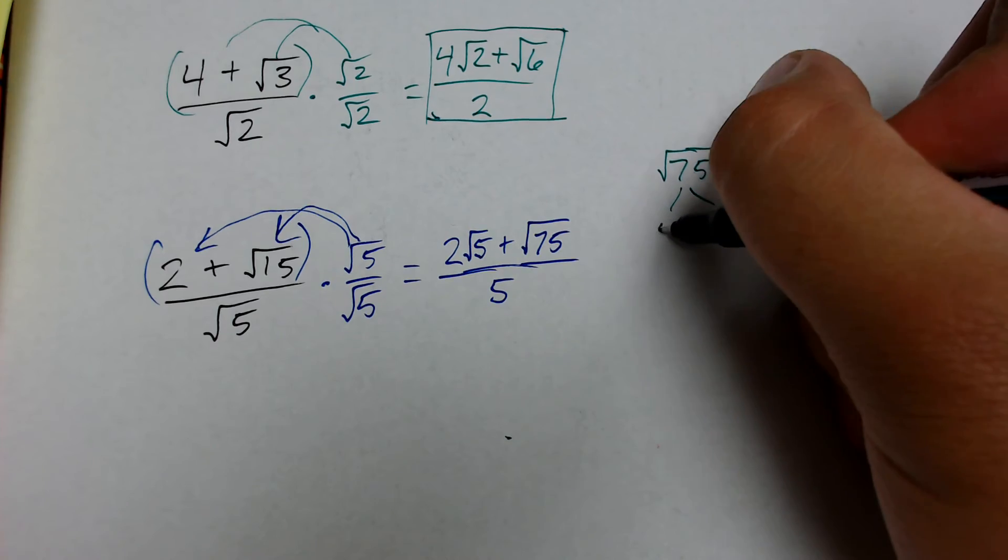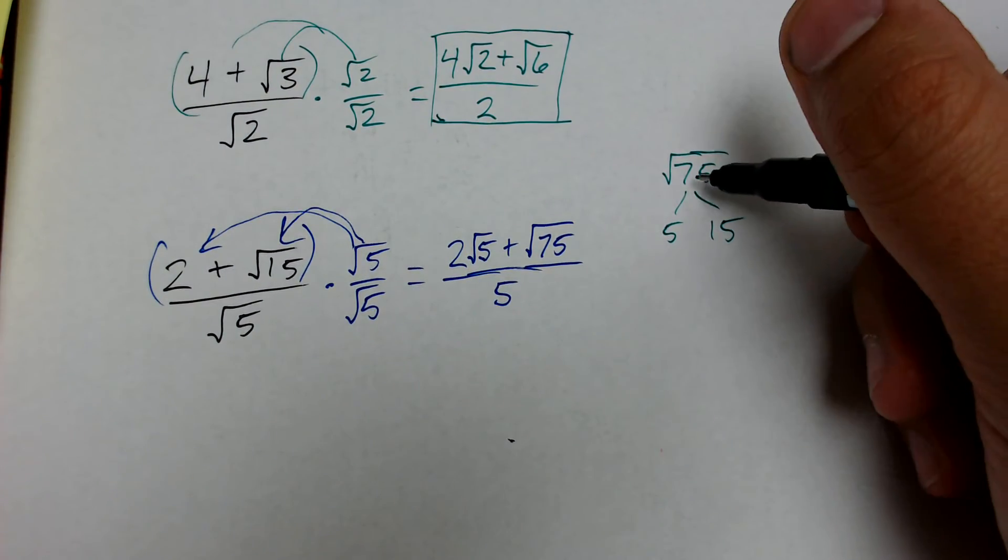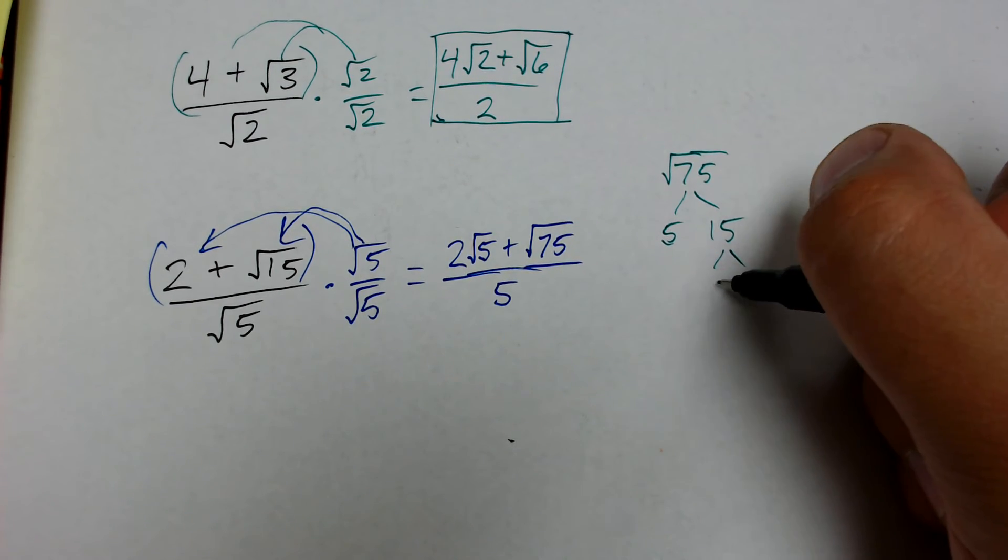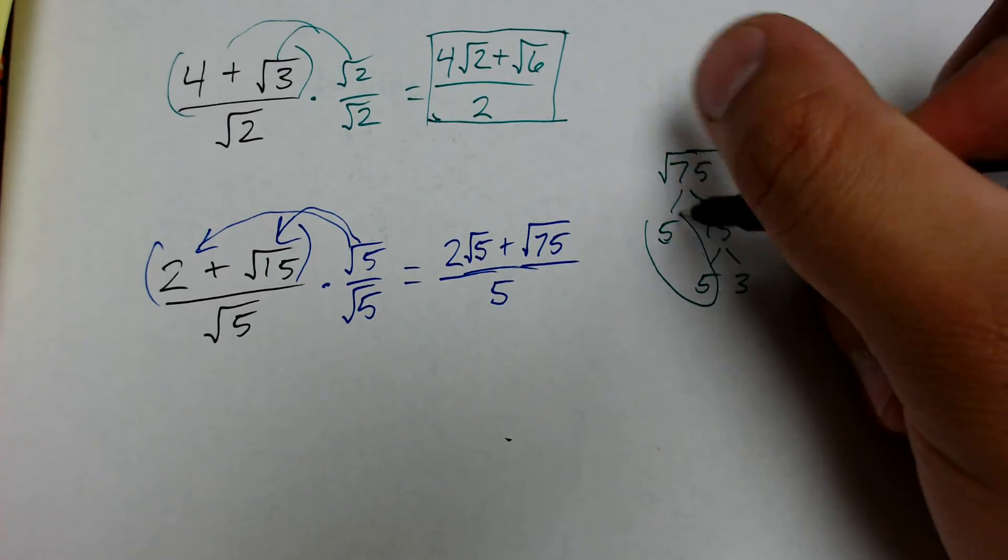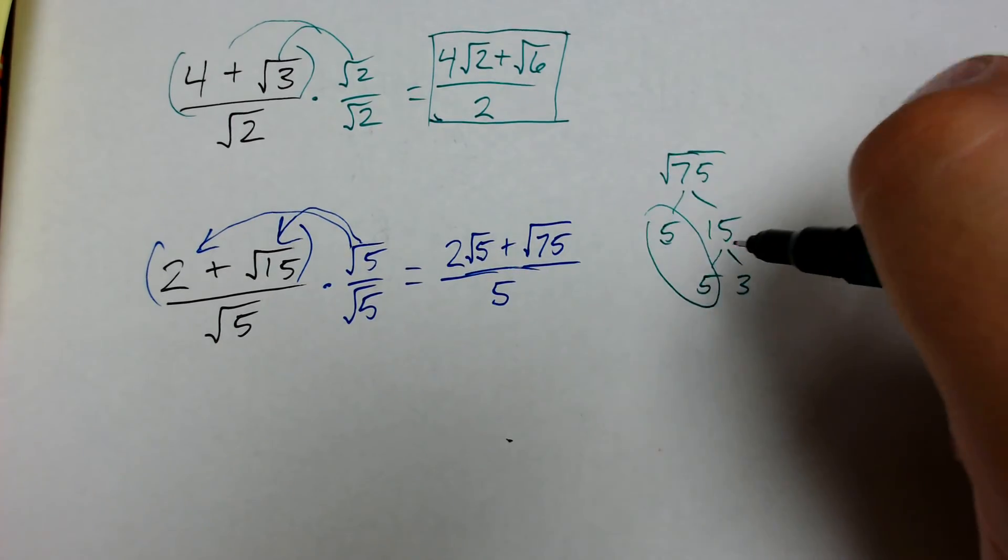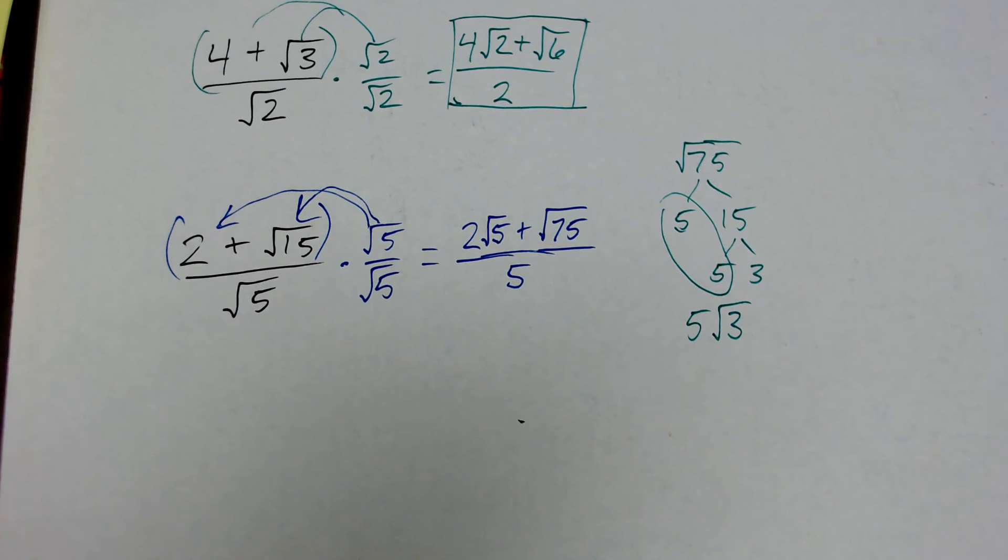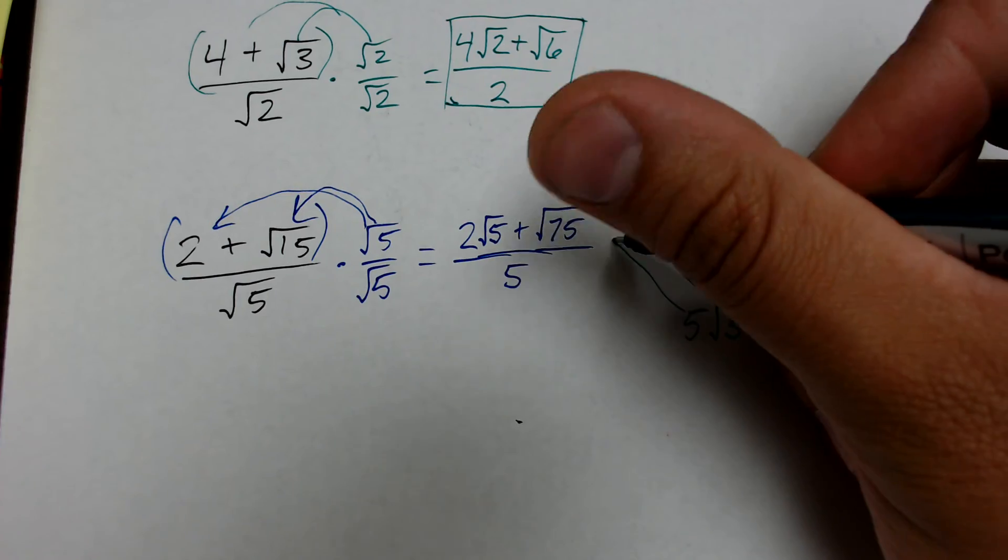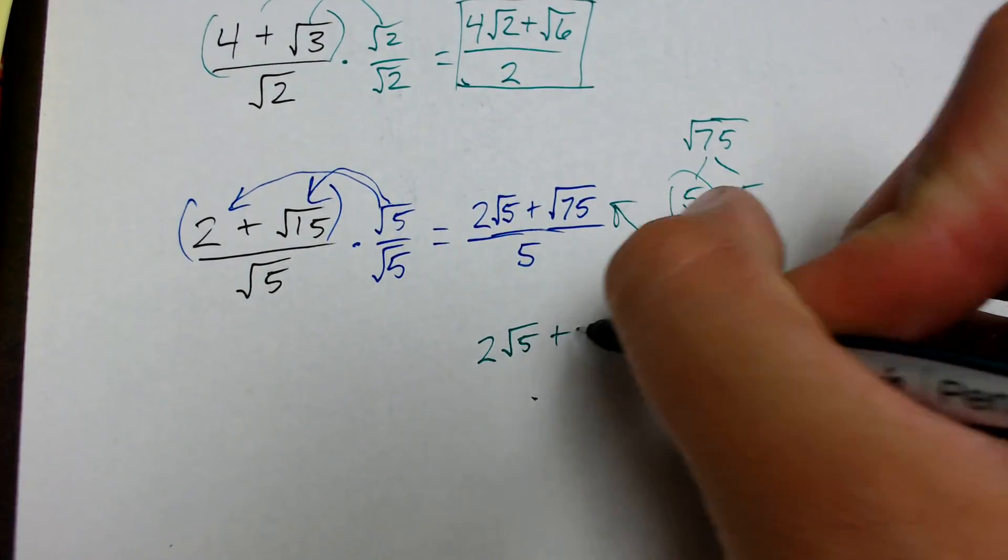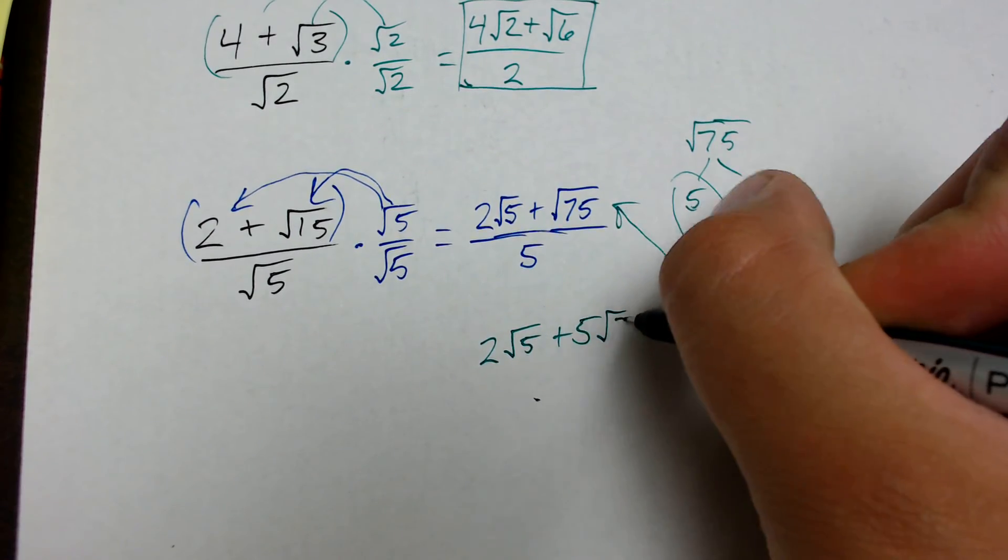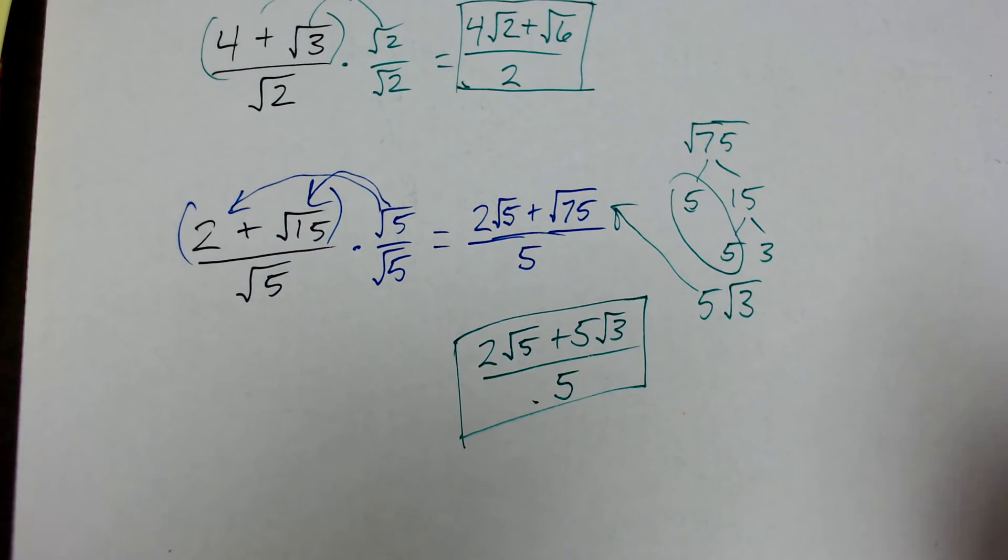I already know that's going to become 5 times 15 because that's what I multiplied to create it. So, 75 will factor into 5 and 15. And 15 will factor into 5 and 3. And I'm all out of numbers, but I do have a pair of 5s here. So, this number 75 gets rewritten as 5 times the square root of 3. So, I'll take this. I'll plug it into my final answer. So, what I get is 2 root 5 plus 5 times the square root of 3 all over the denominator of 5. And that is my final answer.